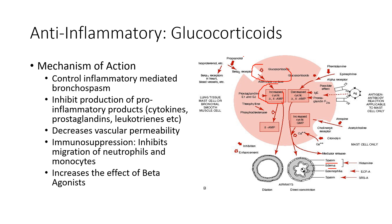Our glucocorticoids are anti-inflammatories. If we have an anti-inflammatory effect in the lungs, it's going to inhibit all those inflammatory products — cytokines, prostaglandins, leukotrienes — which will decrease vascular permeability, decrease congestion in the lungs, and decrease the migration of neutrophils and monocytes, which also lead to edema and secretion buildup.